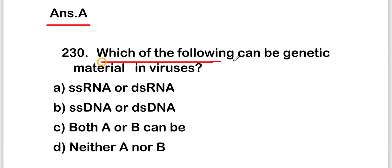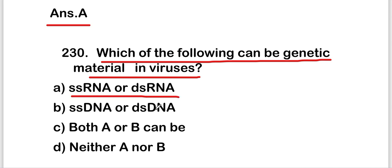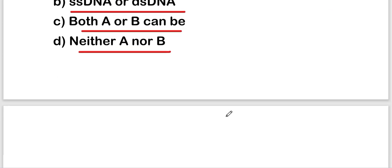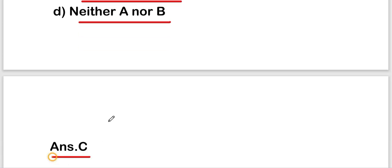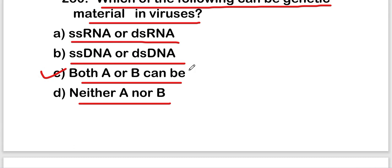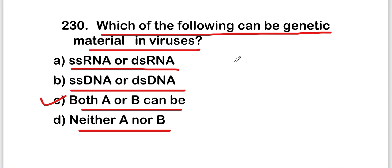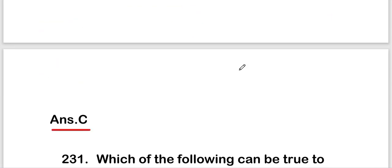The next question: which of the following can be genetic material in viruses? Options are single-stranded RNA or double-stranded RNA, single-stranded DNA or double-stranded DNA, both A or B can be, or neither A nor B. The correct answer is option C — both A and B can be. The genetic material in viruses can be single-stranded RNA, double-stranded RNA, single-stranded DNA, or double-stranded DNA.